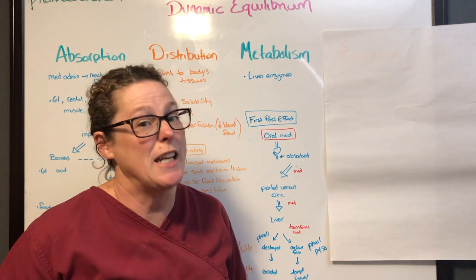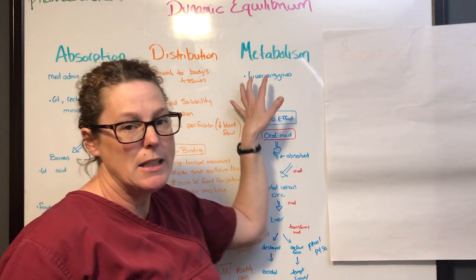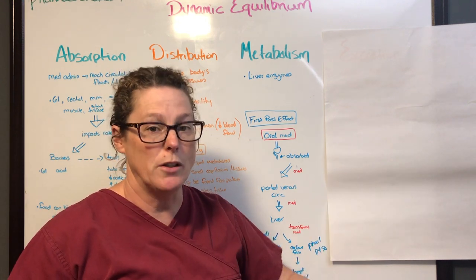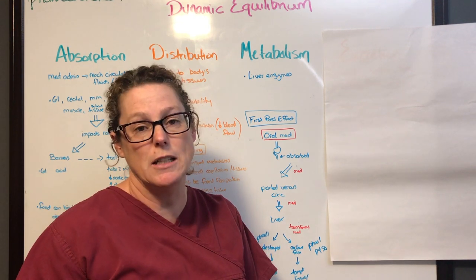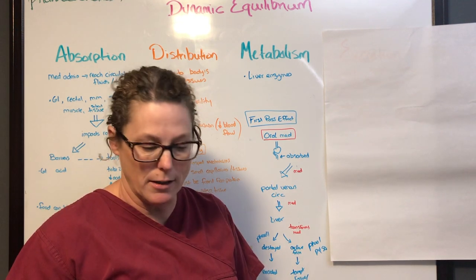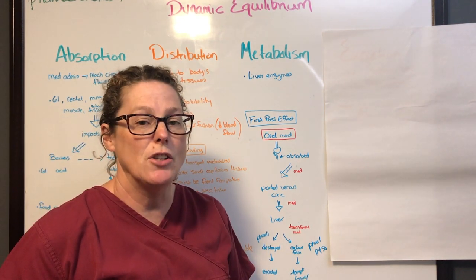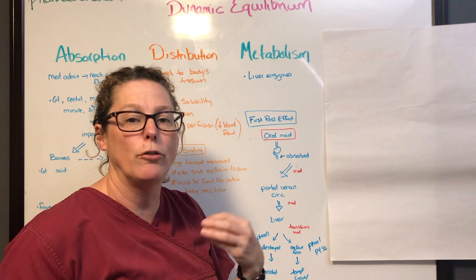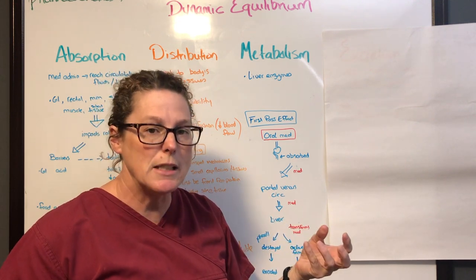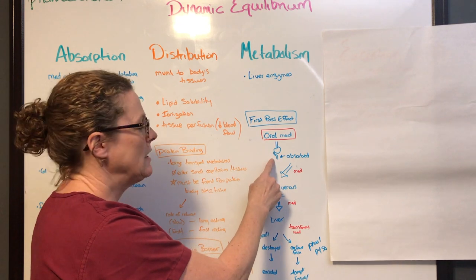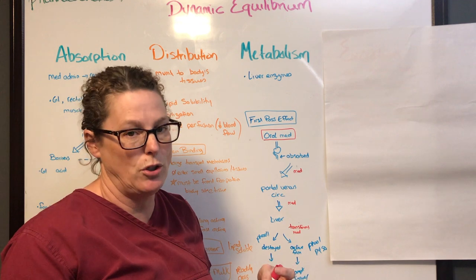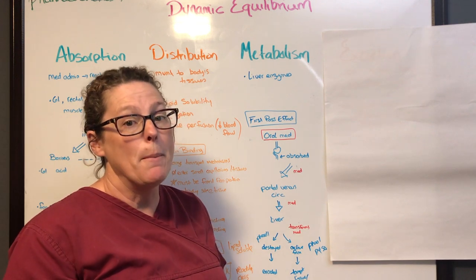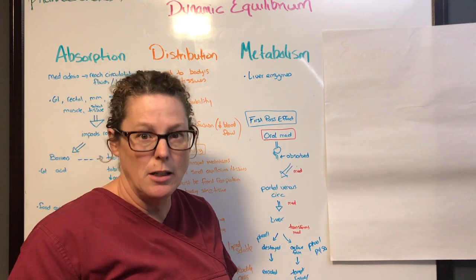The third element of dynamic equilibrium is metabolism. This is where the body takes those foreign chemicals and breaks them down into active and inactive forms. Inactive forms will be excreted, and active forms will continue to their target tissues to have an effect. The liver is one of the major organs where medications are metabolized. When we take oral medications in particular, we have something called first-pass effect: once absorbed in the small intestine, about 60% of drugs enter the portal circulation, which feeds the liver first.